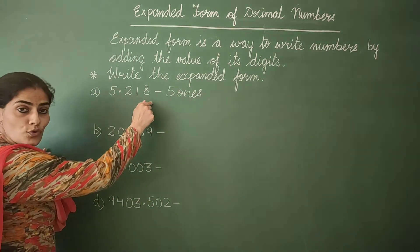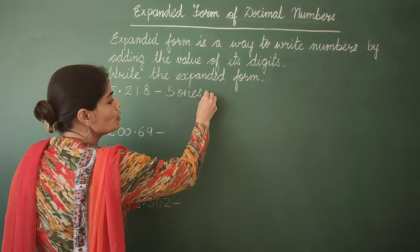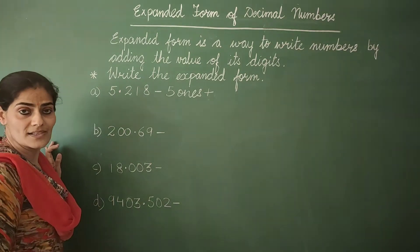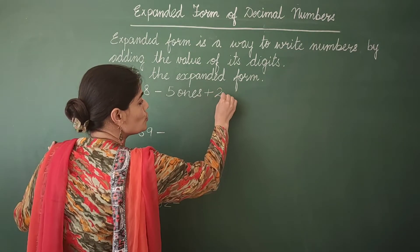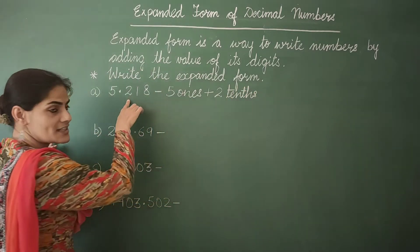Now we are moving to the decimal part. This is 2. 2 is at which place? It is at tenths place. So 2 tenths is the place value of this digit 2.